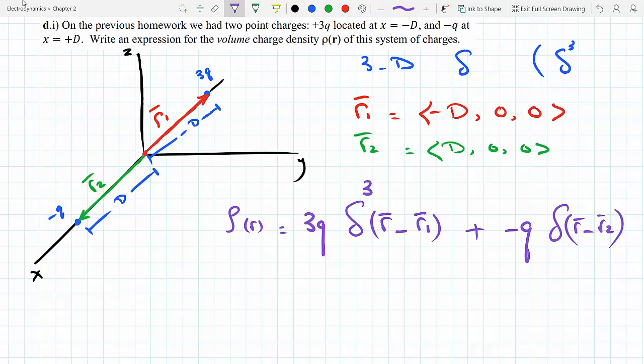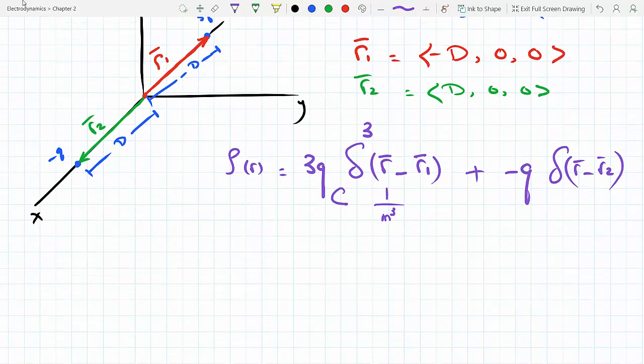We have an issue with units. Actually wait, they do work out because this is one over meter cubed and this is coulombs, so you get coulombs over meter cubed. If you integrate you're supposed to get the charge right.